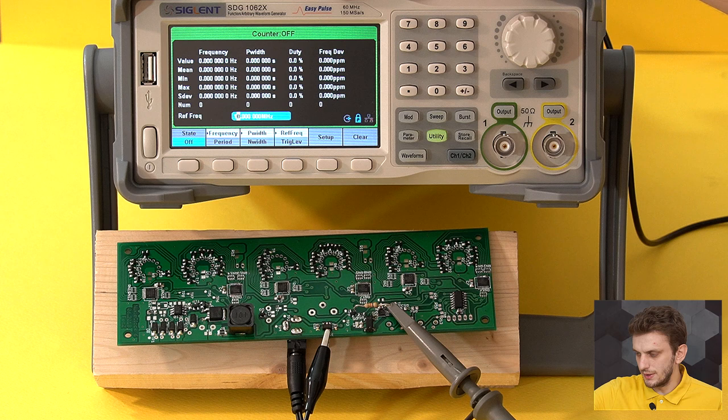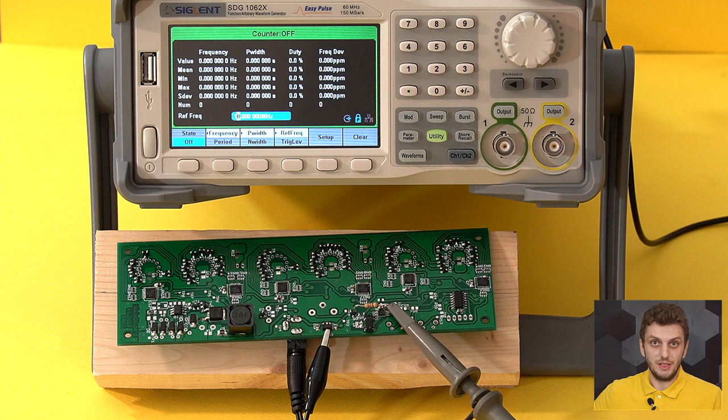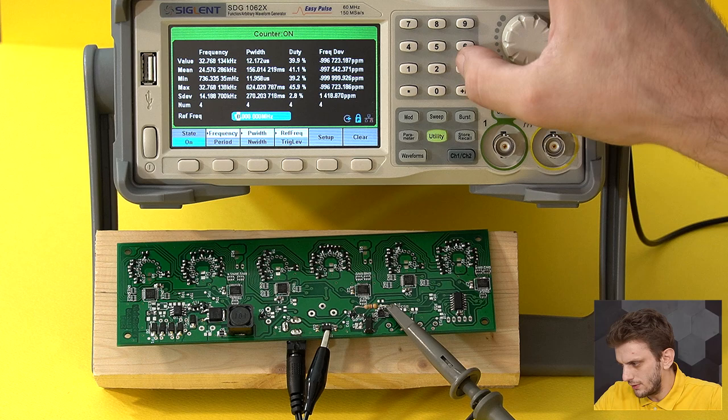To perform the measurement, I have an SDG1062 frequency generator from Siglent. Other than its base function as a signal generator, it also has a counter function built into it. So I already made the connection. If we run the experiment, I've turned on the counter, supply the circuit, and we can see it's starting to measure.